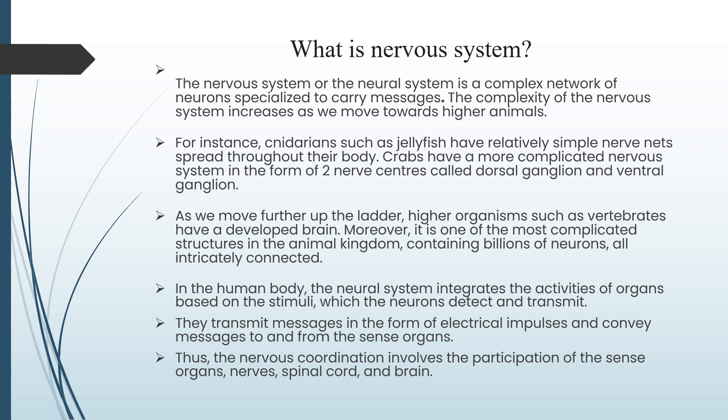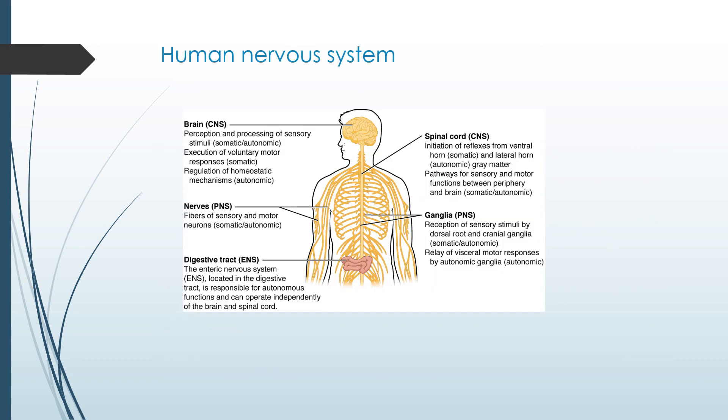They transmit messages in the form of electrical impulses and convey messages to and from the sense organs. Thus, the nervous coordination involves the participation of the sense organs, nerves, spinal cord and brain. The human nervous system contains brain, nerves, digestive tract, spinal cord, and ganglia.